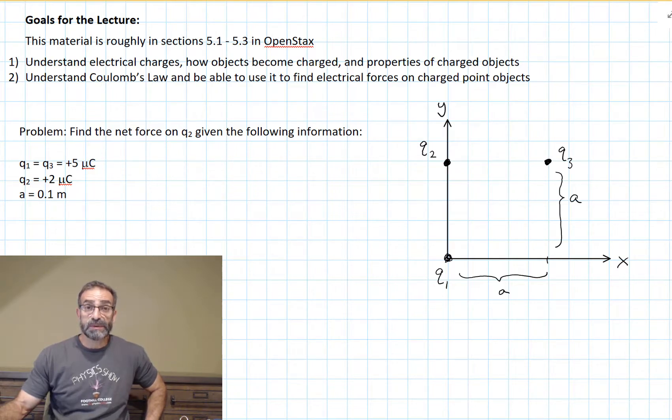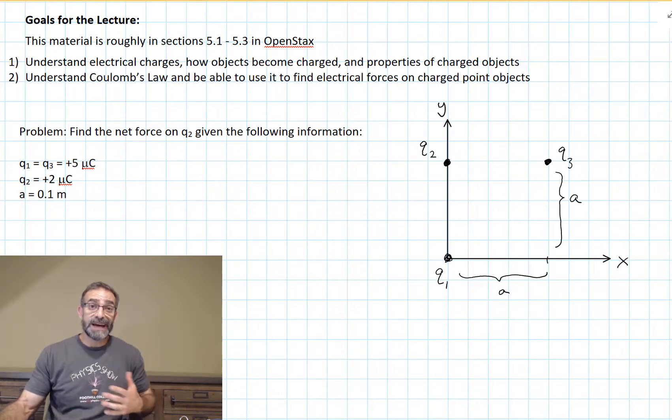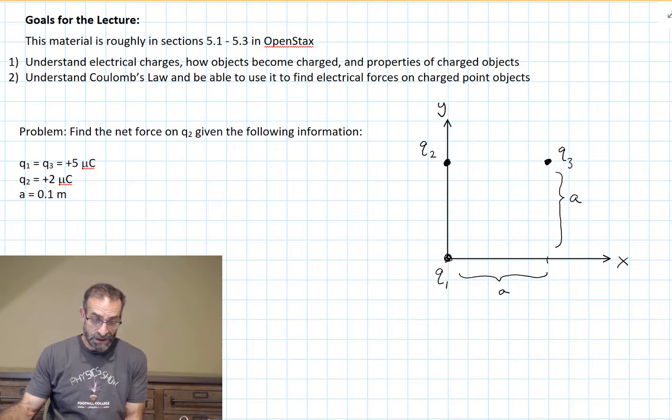Q1, Q2, and Q3 are at three corners of a square. Q1 and Q3 are equal in charge, equal to 5 microcoulombs. The coulomb is actually a very large amount of charge, so typical charges are much smaller. Microcoulombs are very common, 10 to the minus 6 coulombs. Q2 is 2 microcoulombs. All of our charges are positive, and the spacing, the side of the square, is 0.1 meters.